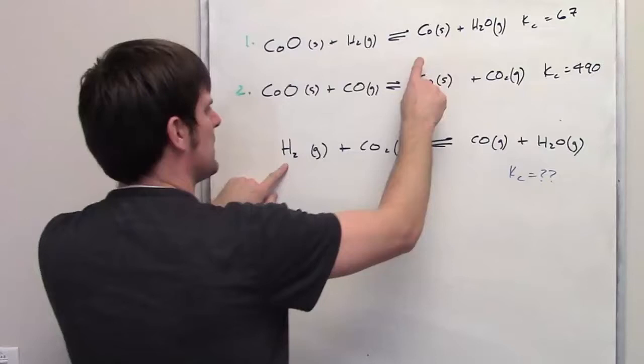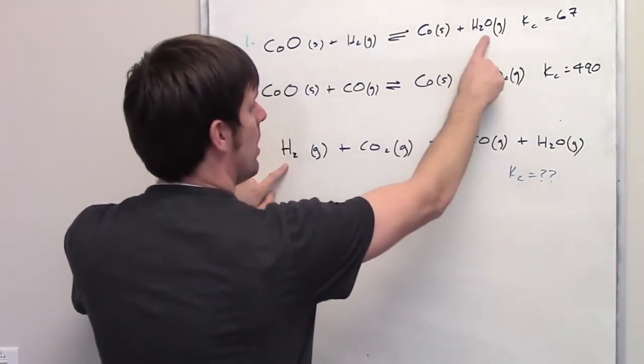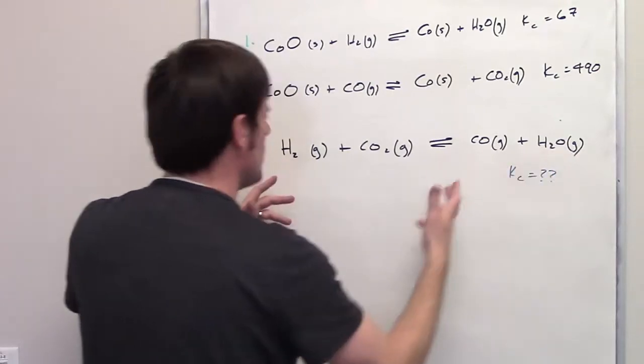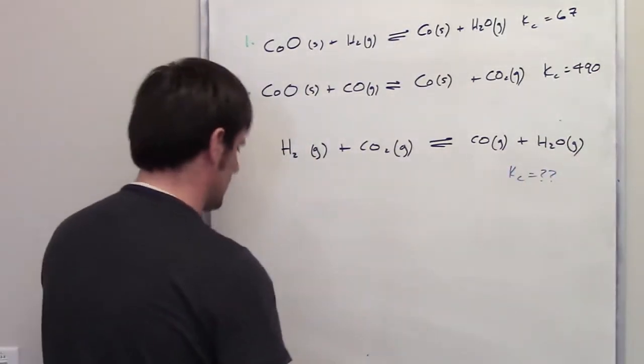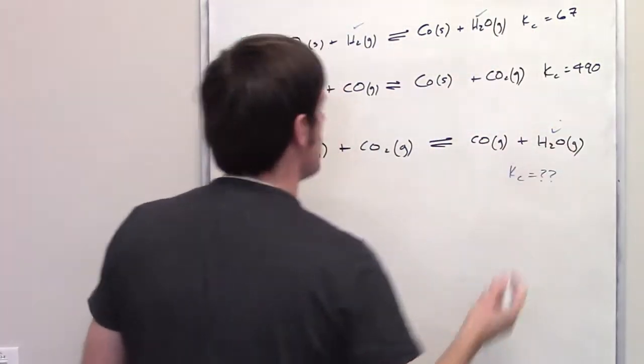Okay, that's good. I've got this Co, cobalt solid. Well, it doesn't appear down here. But I've got water gas. It appears on the right side of the equation. So it kind of looks like at least this H2 and this H2 match and this H2O and this H2O match.